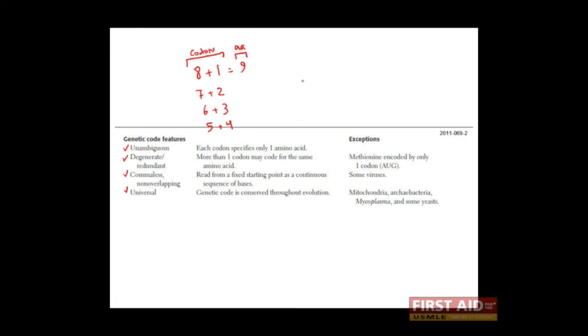Let's talk about what it means to be comma-less or non-overlapping. If I give you an RNA transcript that looks like this, A-U-G-U-U-G-U-U-A, the cell would begin by reading the first three nucleotides and producing an amino acid, shifting over and reading the next three nucleotides, producing another amino acid, and then moving to the last three and producing another amino acid.